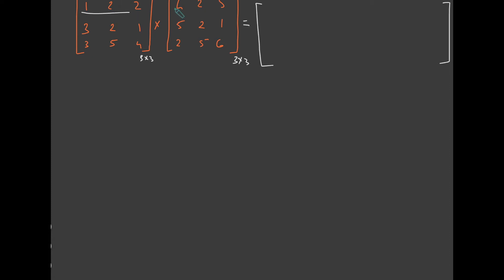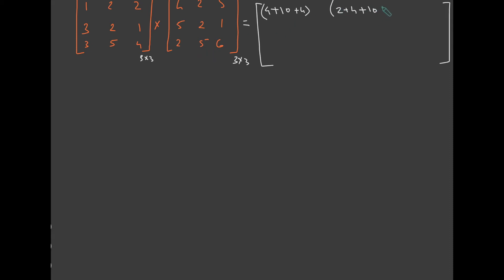Multiply the first row with the first column step by step: 1 times 4 is 4, then 2 times 5 is 10, then 2 times 2 is 4 — that's the first element. Then multiply the first row with the second column: 1 times 2 is 2, 2 times 1 is 2, and 2 times 5 is 10. Then multiply the first row with the third column: 1 times 5 is 5, 2 times 1 is 2, and 2 times 6 is 12. That's the complete first row of the resultant matrix.